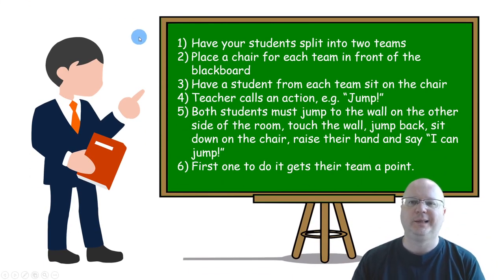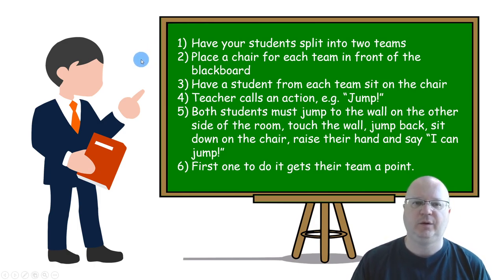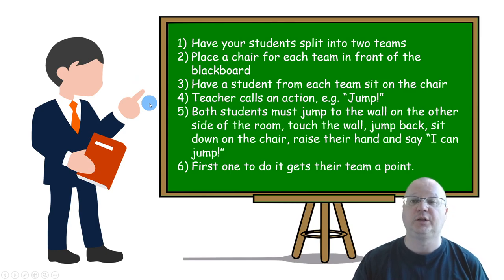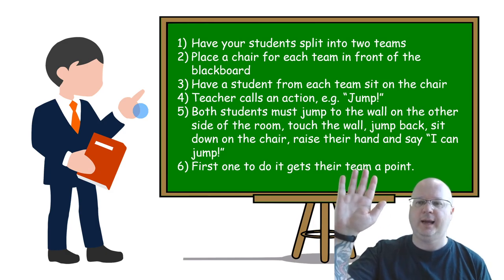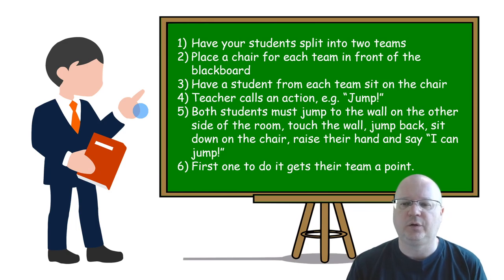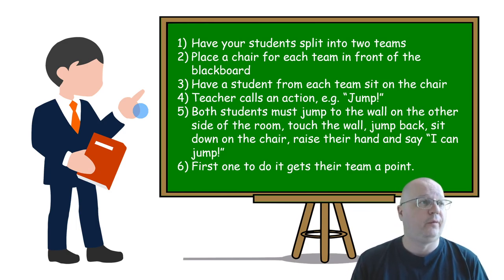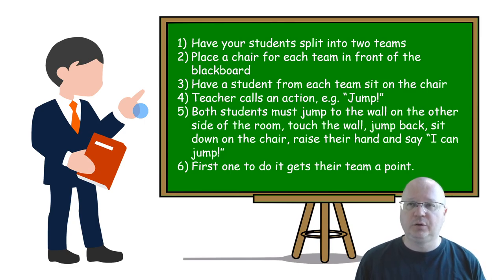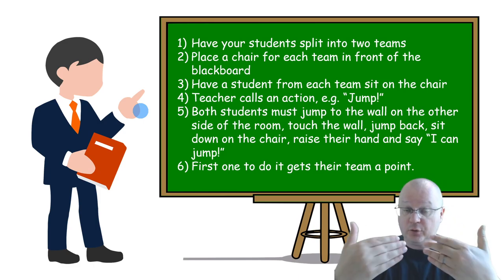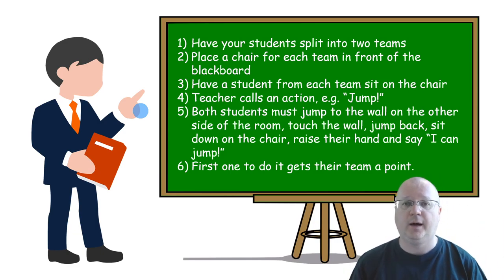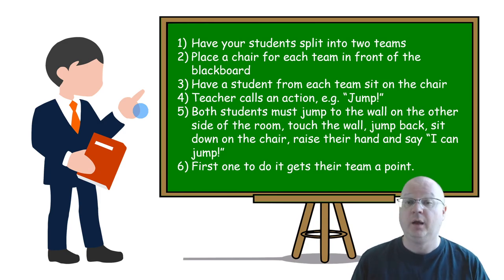Split students into two teams and place a chair for each team in front of the blackboard. A student from each team sits on the chair. The teacher calls an action — for example, jump — and both students must jump to the wall on the other side of the room, touch the wall, jump back, sit down on the chair, raise their hand and say I can jump. First one to do it gets their team a point. Remember, if you say the word 'read' they need to actually imitate reading as they run — this way they connect the action to the word or sentence.